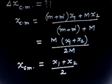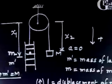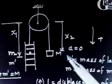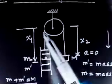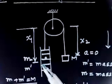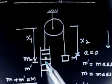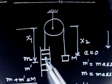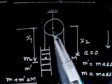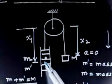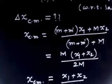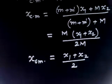Initially, mass capital M lies at distance x2 from the pulley axis, and the center of mass of the ladder lies at distance x1. Since the man is resting at the center of the ladder, the man's coordinate is also x1 from the pulley axis.